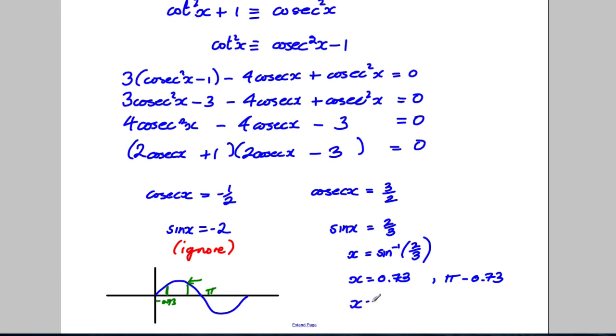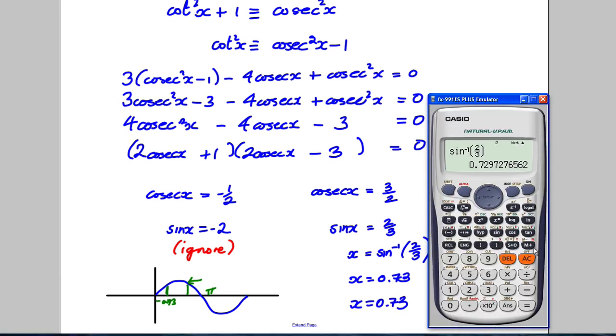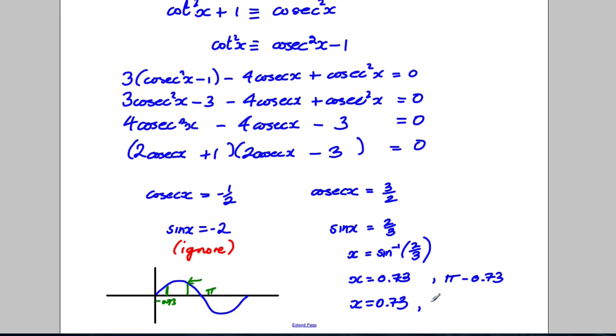The other answer is going to be pi subtract 0.73. So, our two x's are 0.73 and pi take away this. So, pi take away the answer, which is 2.41. All x is 2.41. Underline your answers and you're done.